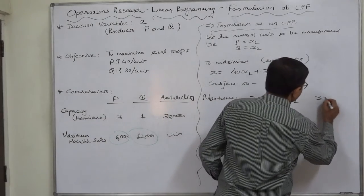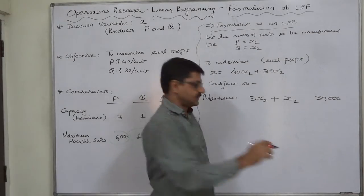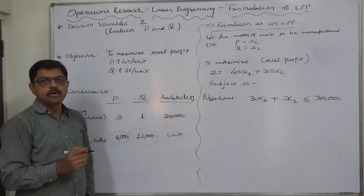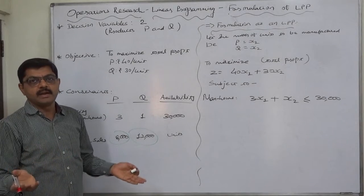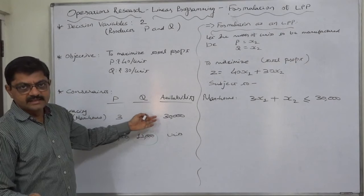But availability is 30,000. We can use all these 30,000 units or less - the thing is clear, we cannot use more than 30,000 hours because only 30,000 hours are available.